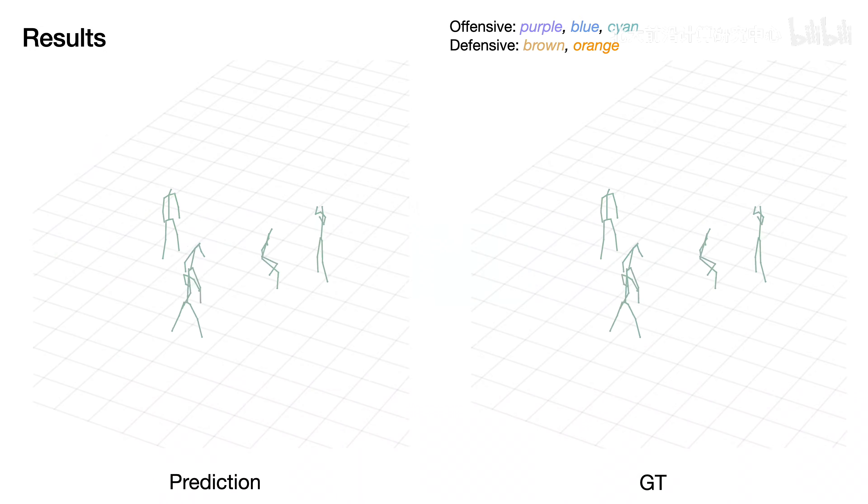Next, we present some results predicted by our method, with color green indicating input motion. In this case, both Player Brown and Player Orange succeed in spotting the passing move and approach the offense players accordingly, which is consistent with the ground truth.